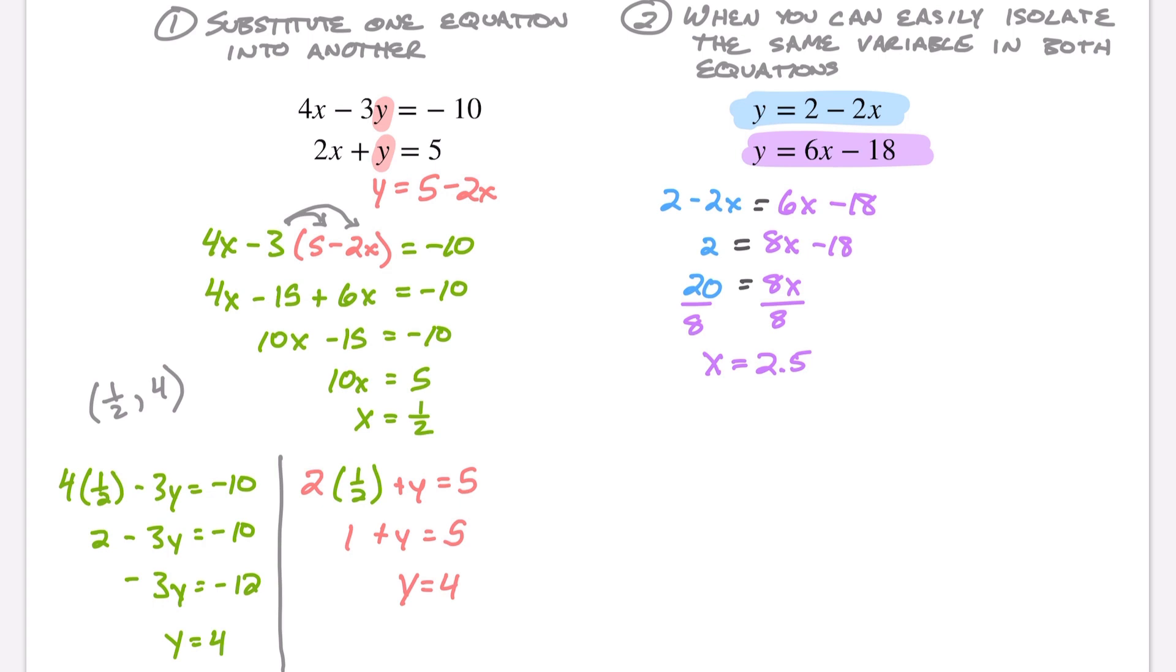Just like before, I'm going to take this 2.5 and I can put it into either equation to solve. So let's do that. With our first equation, we have y = 2 - 2(2.5). Then y is going to equal 2 - 5 and y is going to ultimately end up equaling -3.